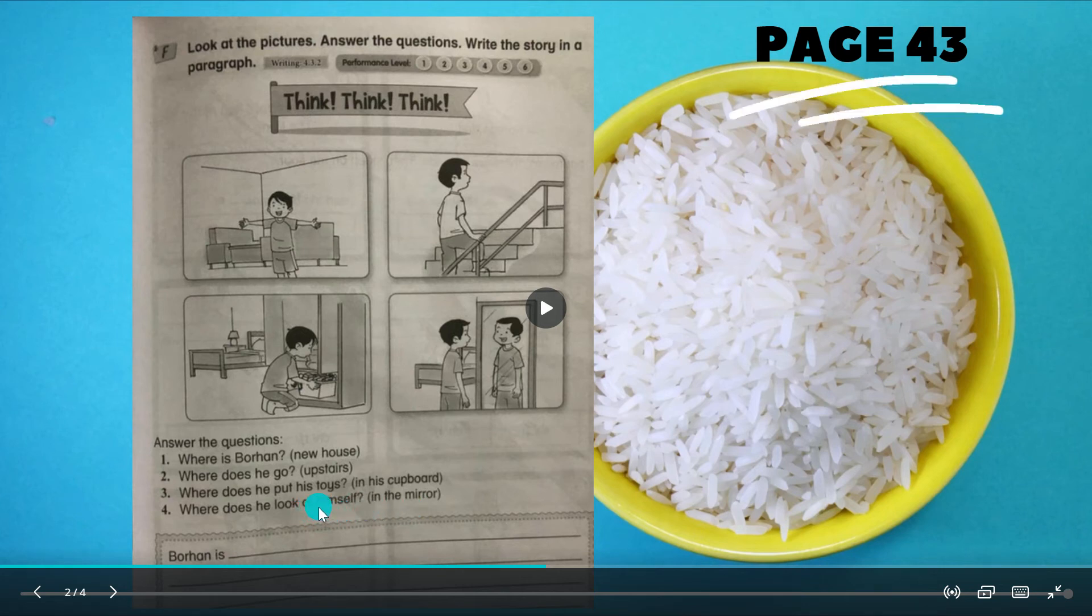Number four - where does he look at himself? Jawapan clue dia in the mirror. Dia tengok diri dia kat mana? Mesti tengok diri cermin. The sentence is: he looks at himself in the mirror. Look ni dia ada es di belakangnya - looks. Macam ni puts ada es, go pula tambah es sebab dia berhujung o, so go becomes goes.